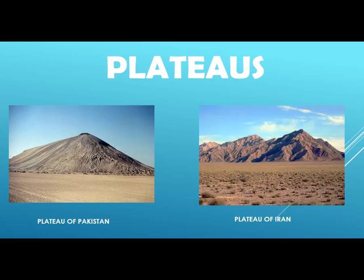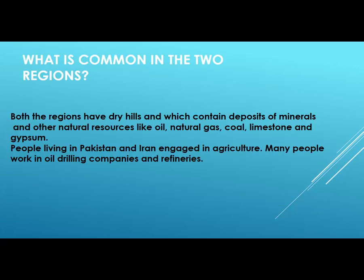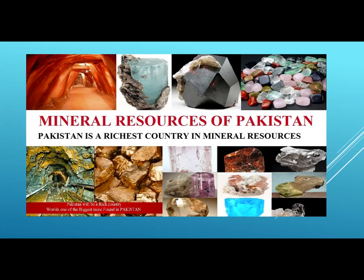Now, see the plateaus. As I told you what plateaus are in the last lesson — the plateaus of Pakistan and the plateaus of Iran have common features. Both regions have dry hills which contain deposits of minerals and other natural resources like oil, natural gas, coal, limestone, and gypsum. People living in Pakistan and Iran are engaged in agriculture, and many work in oil drilling companies and refineries. You can see pictures of gems, a coal mine, and a salt mine — all found in the plateaus of Balochistan and Punjab.